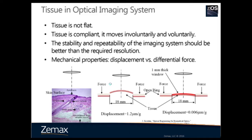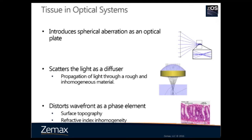The tissue is part of the optical system, so we need to understand its impact on system performance. Even if you design a perfect system, when you scan into the tissue, the tissue will introduce spherical aberration, just like an optical plate. The tissue also scatters light like a diffuser, so even with a great system, the spot size is much larger due to scattering. The tissue also distorts the wavefront due to surface topography and refractive index inhomogeneity, decreasing system performance.